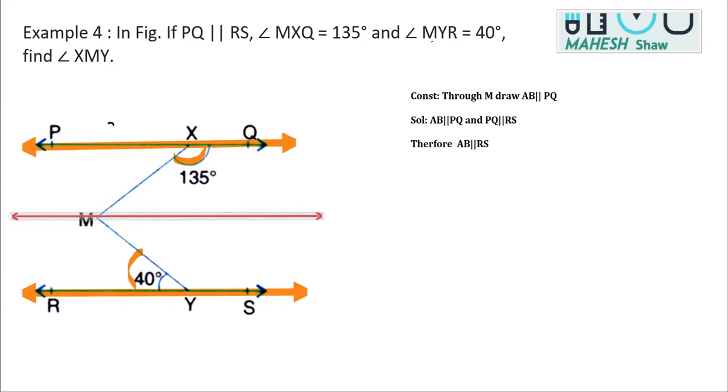For example, I have drawn a line and I named it AB. That will be part of constructions. In the construction, you will be writing 'through M draw AB parallel to PQ.' As you know, two lines which are parallel to the same line are parallel to each other. So these three lines become parallel.